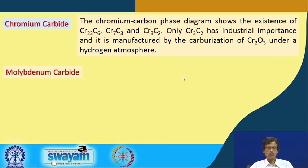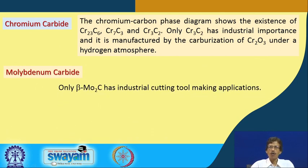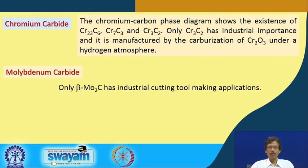Molybdenum carbides are very useful, and one particular form has the formula Mo₂C. Different crystal varieties exist — alpha, beta, gamma, and delta forms. Molybdenum-based industrial cutting tools are also very useful, so molybdenum carbide is employed as a cutting tool.